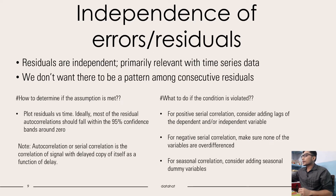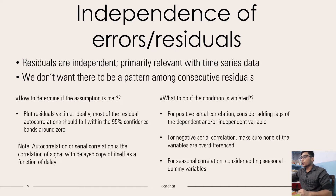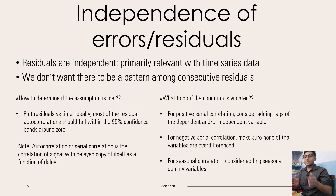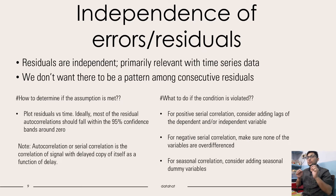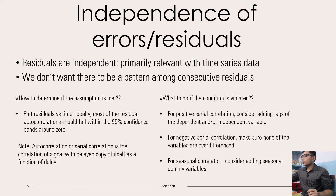What to do if the condition is violated? For positive serial correlation, consider adding lags of the dependent and/or independent variable. For negative serial correlation, make sure none of the variables are over-differenced — over-differenced means subtracting the variable by itself to eliminate any trend, seasonality, and other patterns. For seasonal correlation, consider adding seasonal dummy variables.